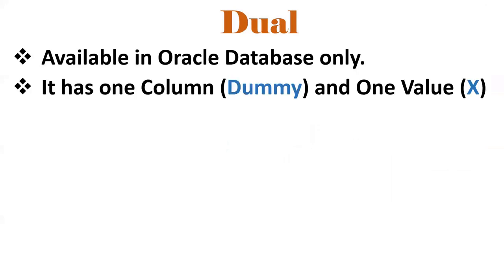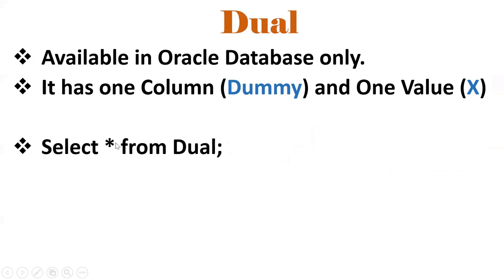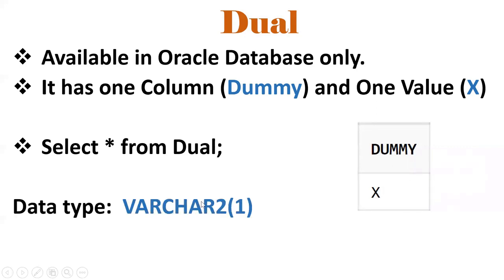Let's discuss the DUAL table. It is available in Oracle Database only. It has only one column and one value. The name of the column is DUMMY and its value is X. This is one of the important interview questions asked in entry-level interviews. The data type is VARCHAR2 and the data size is 1.